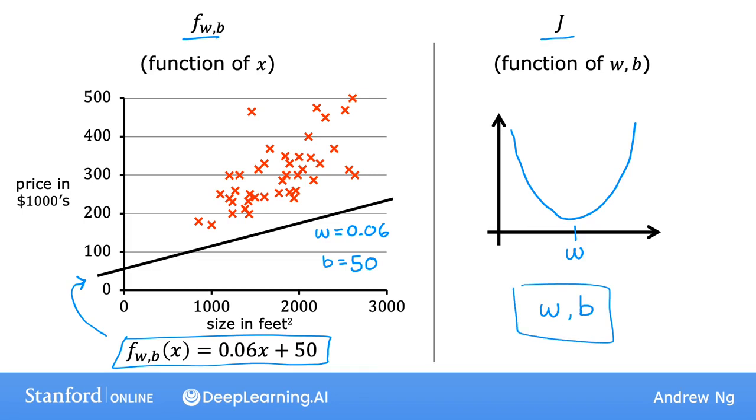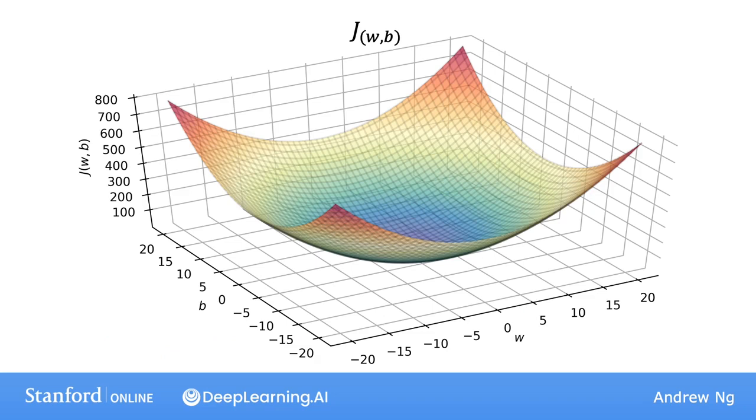It turns out that the cost function also has a similar shape, like a soup bowl, except in three dimensions instead of two. In fact, depending on your training set, the cost function will look something like this.